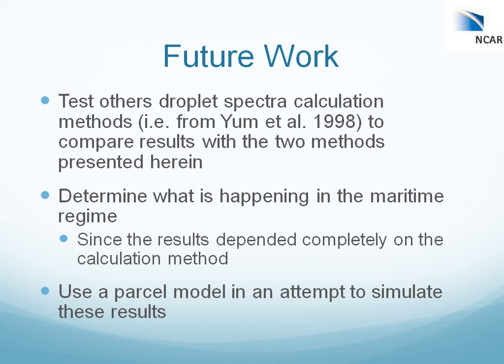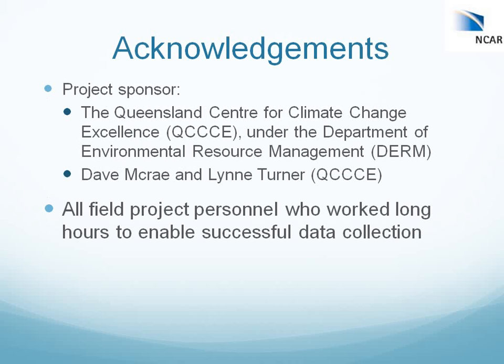One other thing to mention: even though we're seeing a tendency for a possible shift — a tail of larger drops — that doesn't say anything about how this is affecting precipitation on the ground. This is only the first step in the hygroscopic seeding conceptual model. Masataka mentioned yesterday in their hygroscopic flare seeding simulations and cloud chamber work that they're not seeing that effect all the way through to precipitation on the ground. I'd like to acknowledge our sponsors and field project personnel who worked long hours. I'll take any questions.